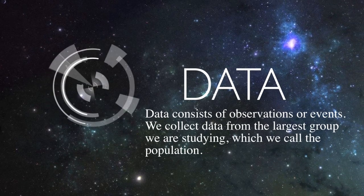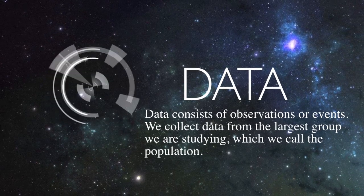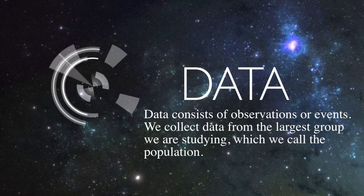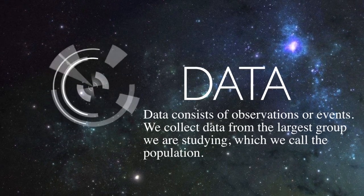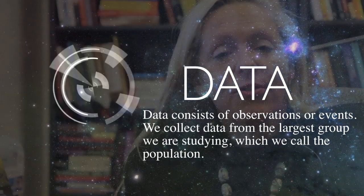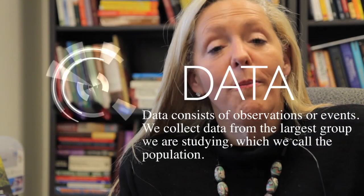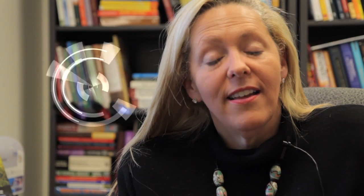Data consists of observations or events. We collect data from the largest group we're studying, called the population, and then from there we choose a smaller subset of the population called the sample.